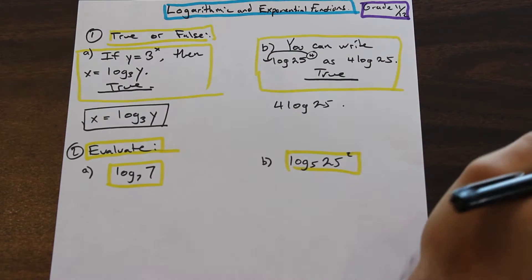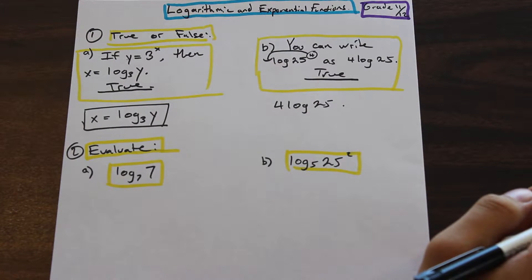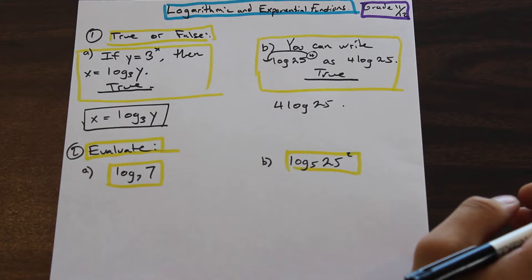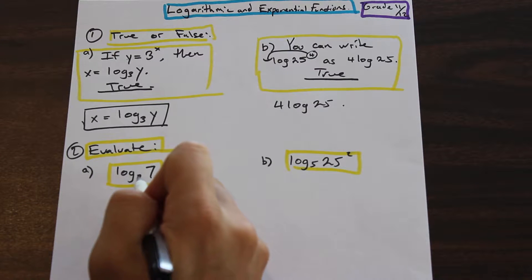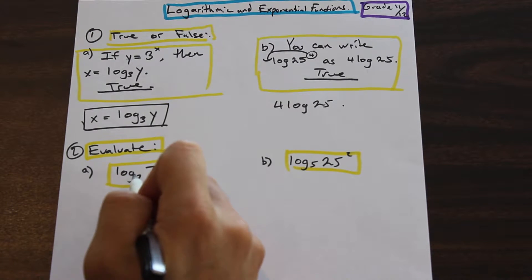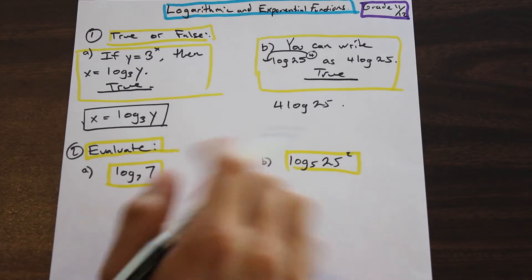Let's move on to question two and we're asked to evaluate log base seven, seven. So another trick that I wanted to show you, which is why I selected this one, is if you have log to this base seven times seven, or log to any base times the same number as the base, that's always going to equal one.